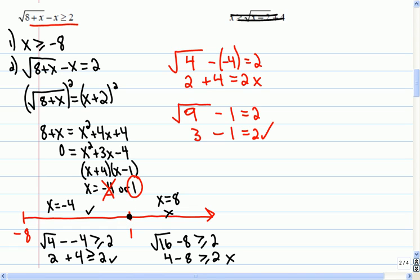It can be equal, so I can include 1. At negative 8, it's greater, so it can be included as well. So it's going to be this region in here, which goes from negative 8 is less than or equal to x is less than or equal to 1.